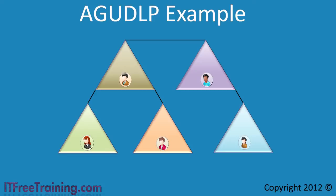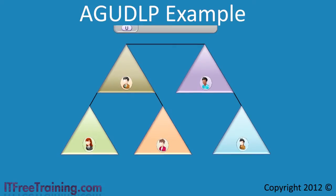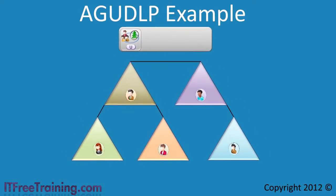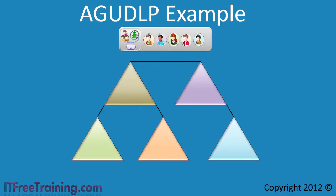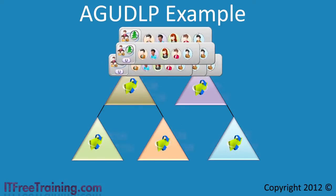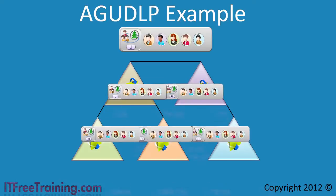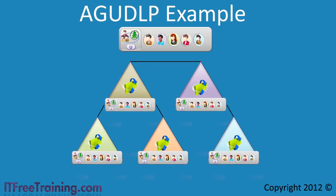The easiest way to achieve this would be to create a universal group and put all the top sales people in it. This universal group would be applied to all the shares in all the domains, giving all the top sales people access to the data they need. However, there are a number of problems with this approach.